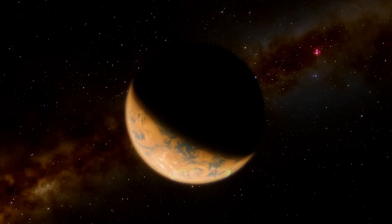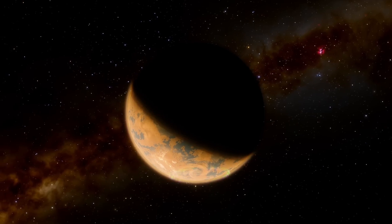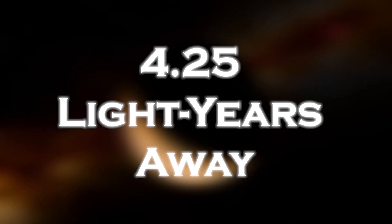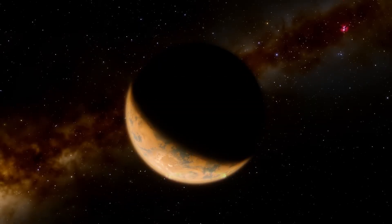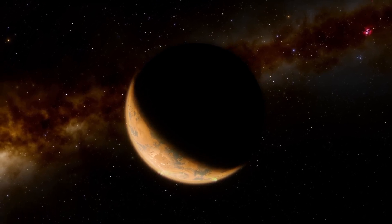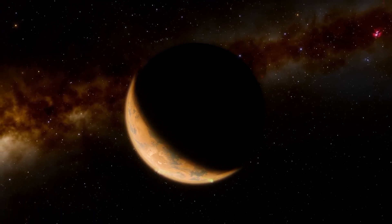The exoplanet, the closest to Earth, lies in the habitable zone of our nearest neighboring star, Proxima Centauri, about 4.25 light years away. Proxima b was believed to be locked in synchronous rotation similar to the Moon with Earth, with one side always facing its star.